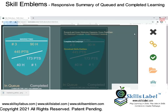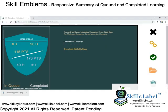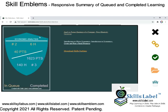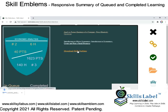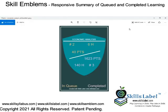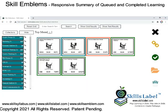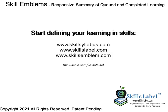To get a better idea of the actual concept, I suggest visiting www.skillsemblem.com. To get the information in there, you have to start adding everything: go to www.skillssyllabus.com, create a syllabus, go to www.skillslabel.com, start creating the labels, and then the learners can access these skill emblems.